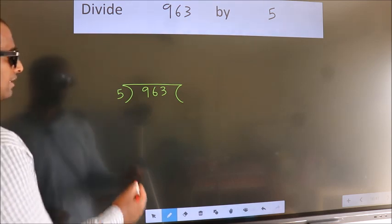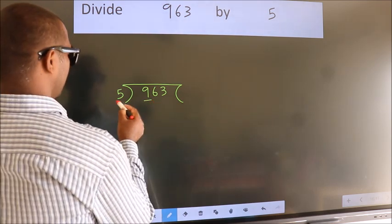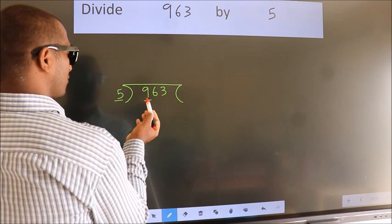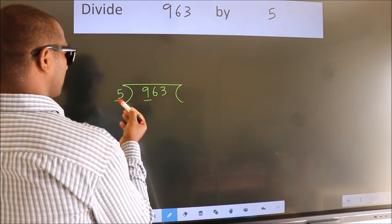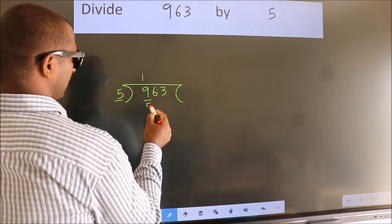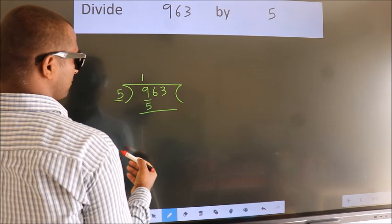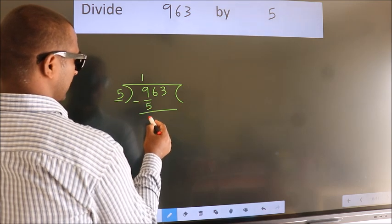Next. Here we have 9, here 5. A number close to 9 in 5 table is 5 1s 5. Now we should subtract. We get 4.